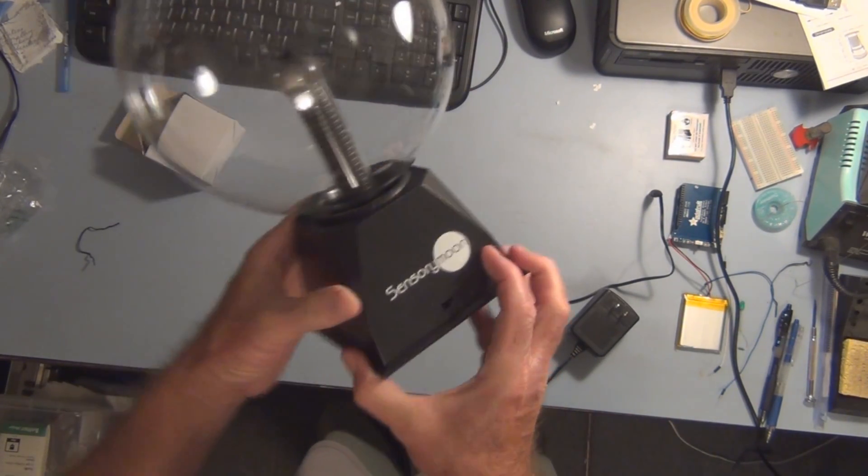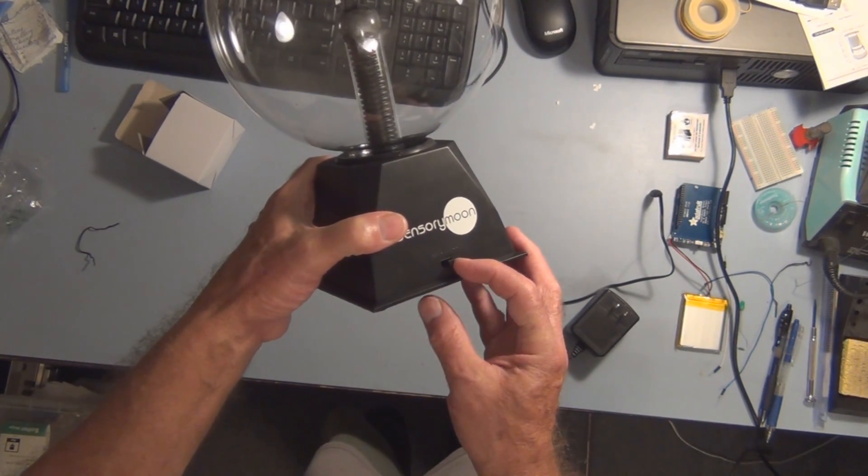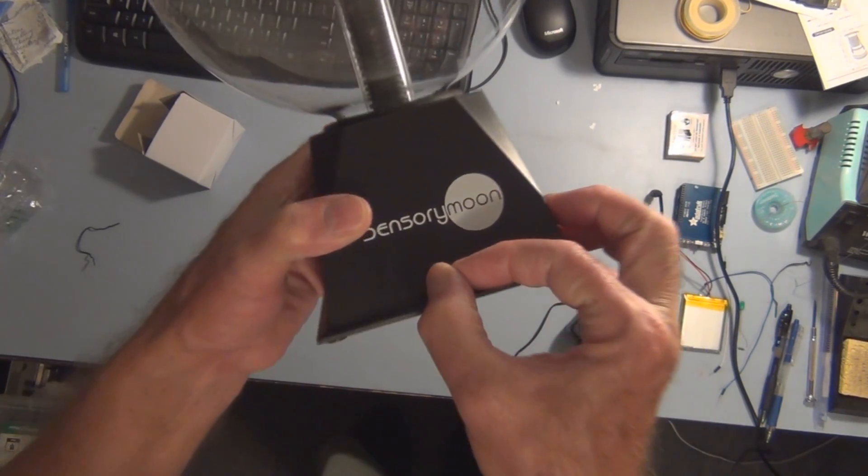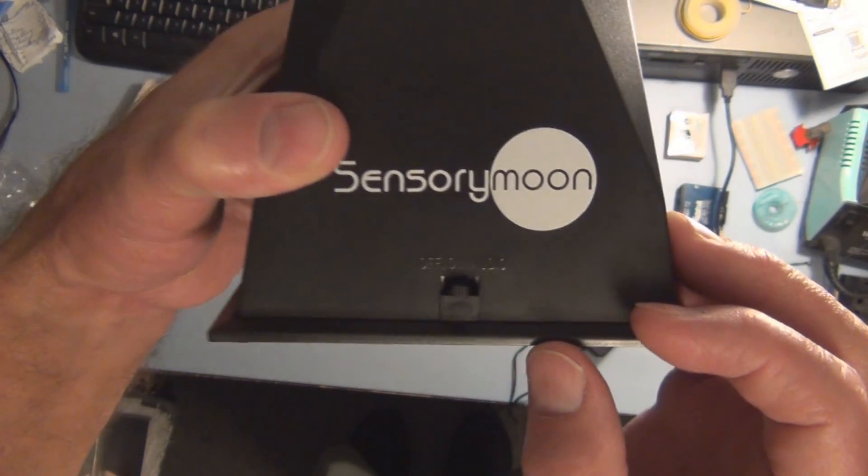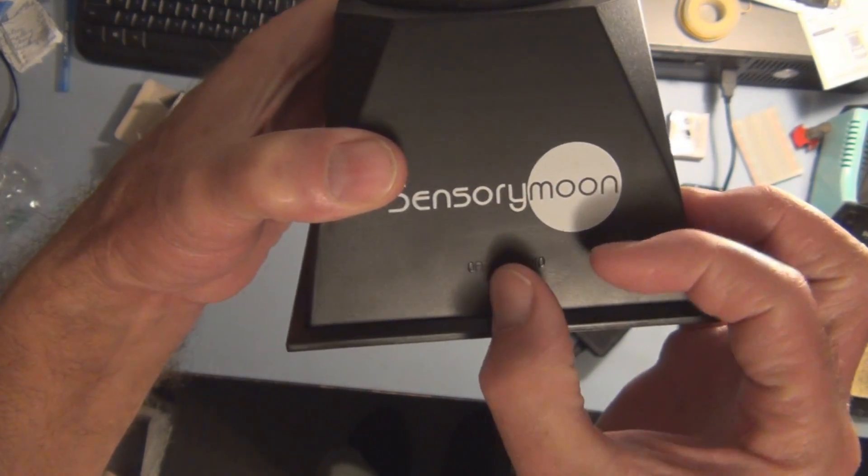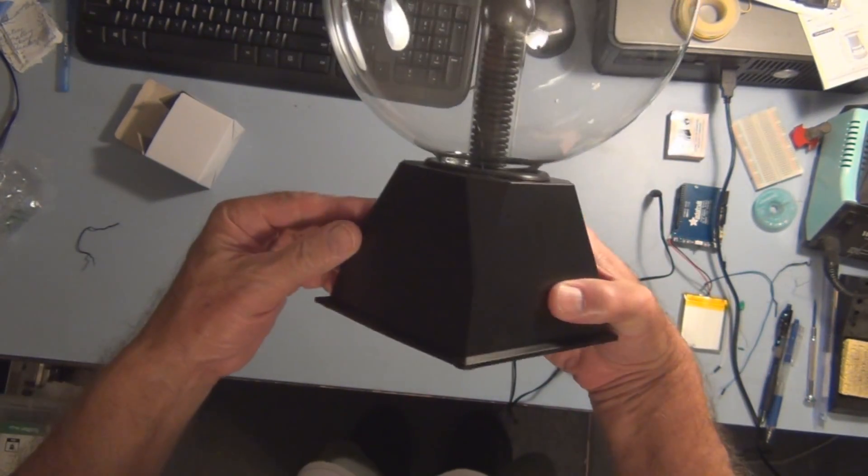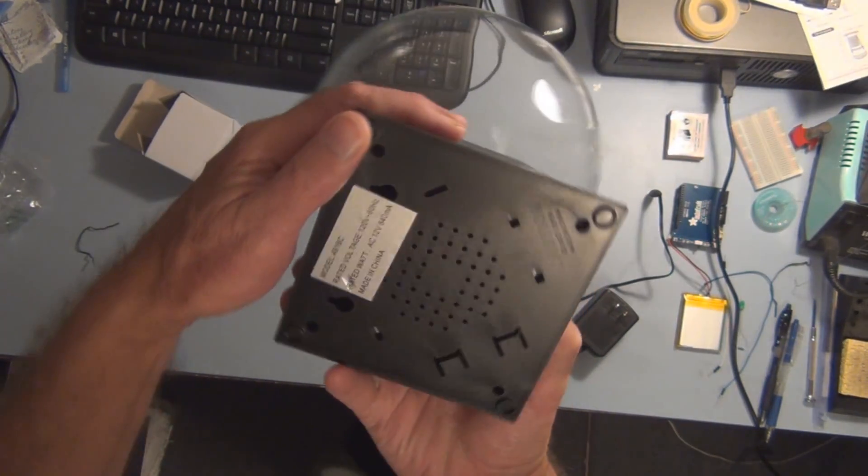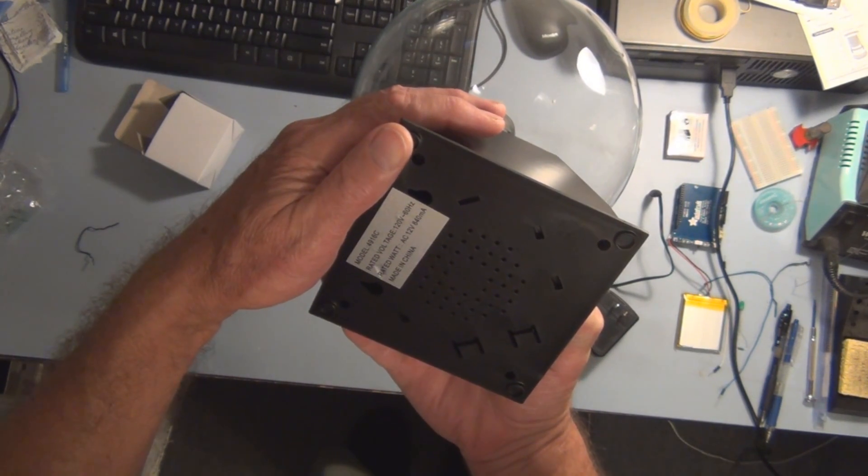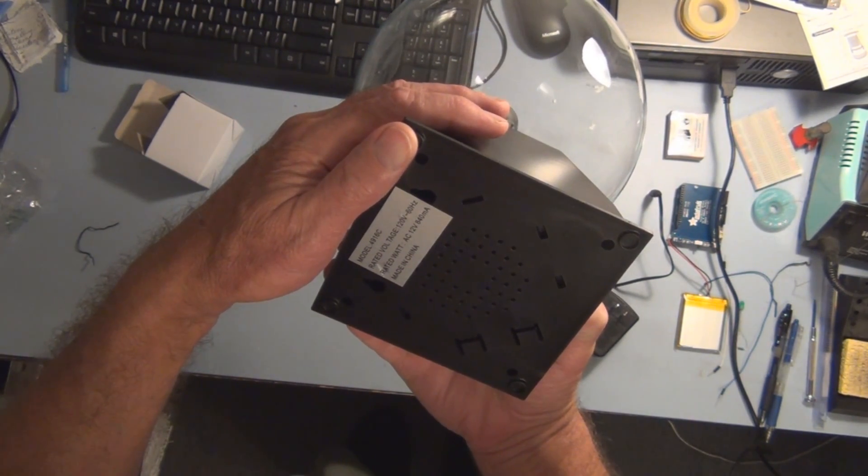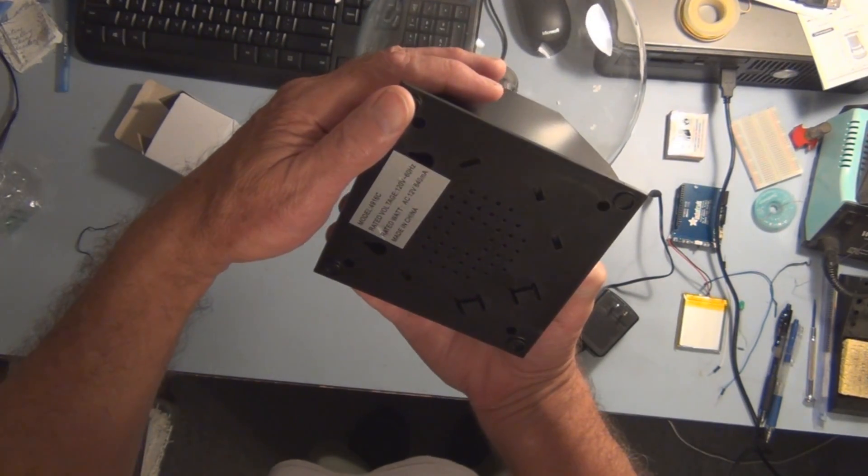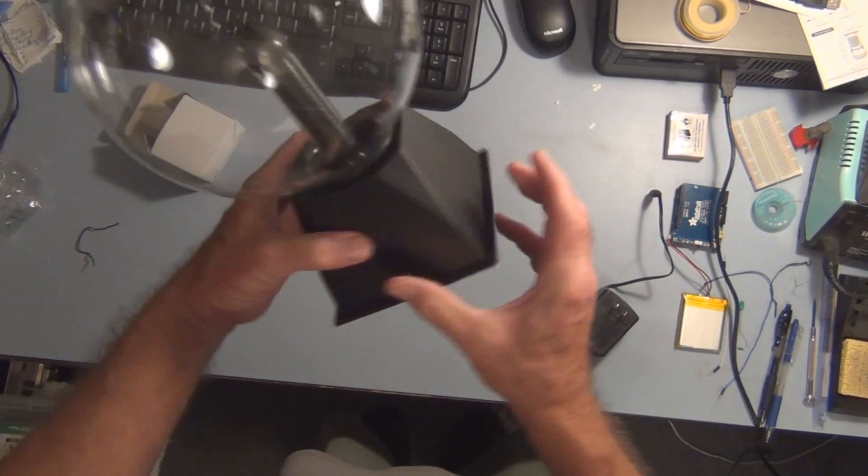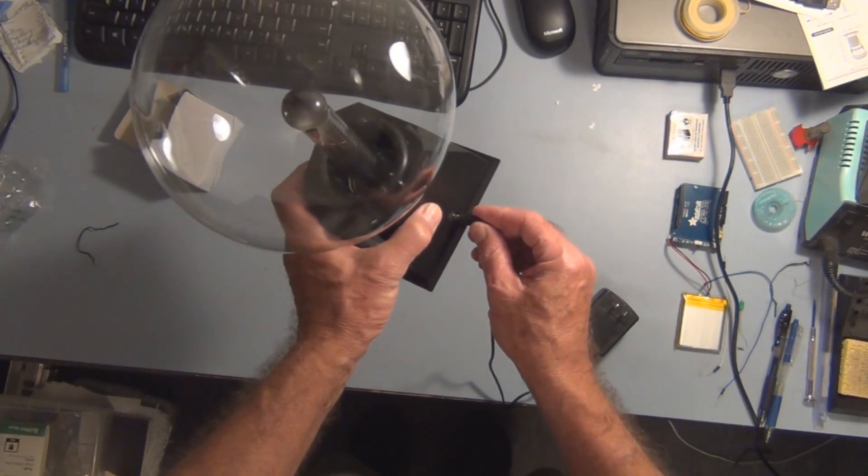So basically there's just, oh it does have an audio setting also, so off, on, and audio. Let's see, the speaker underneath, rated watts AC 12 volts 840 milliamps, made in China. So let's plug this in.